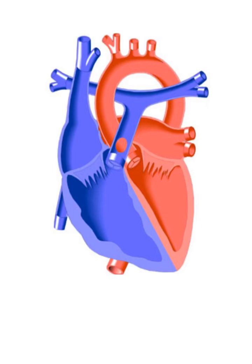Here's a picture of an AP window. The window itself is right here — it's basically a communication between the pulmonary artery and the aorta, and as you can see by the size of it, it's much bigger than a PDA is. If you go back and look at what a PDA is, I did that one a long time ago, so just go back and maybe review that first — PDAs are usually up here and they're much smaller.